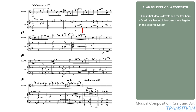In the middle of the second system we start having longer groups of slurred notes, and less staccato in the viola. The accompaniment has not yet changed — it remains a combination of longer notes in the woodwind and pizzicato strings. By the time we enter the third system, the viola has no more staccato notes, although the contour of its motive hasn't changed yet.